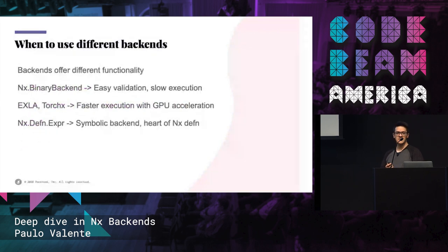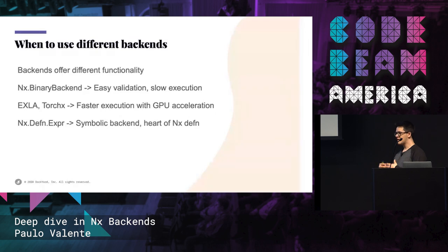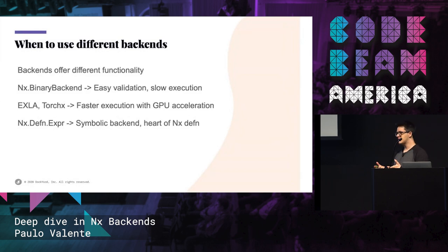Different backends have different capabilities. The binary backend is the default implementation because it is written in pure Elixir, so you don't need to install a NEC compiler or anything like that to use it. It's really good for validating your ideas with a smaller subset of data. And for faster execution, we have two implementations: EXLA and TorchX.